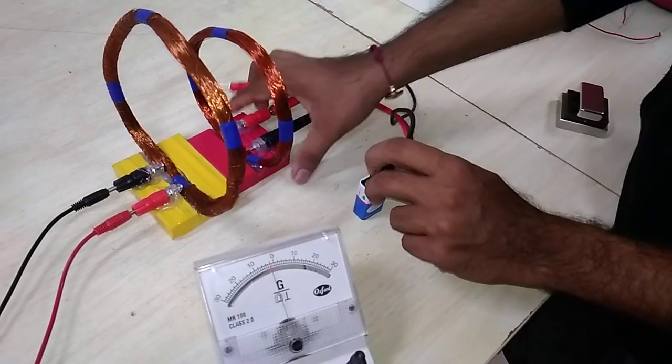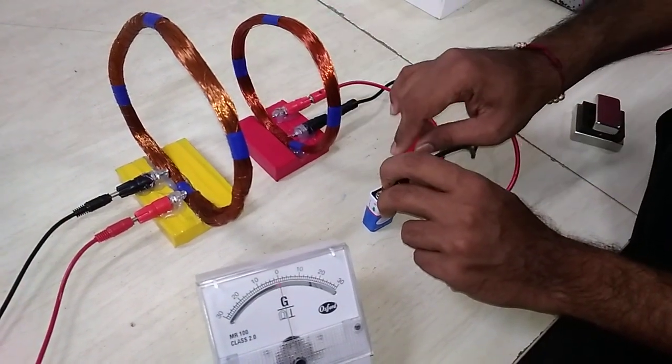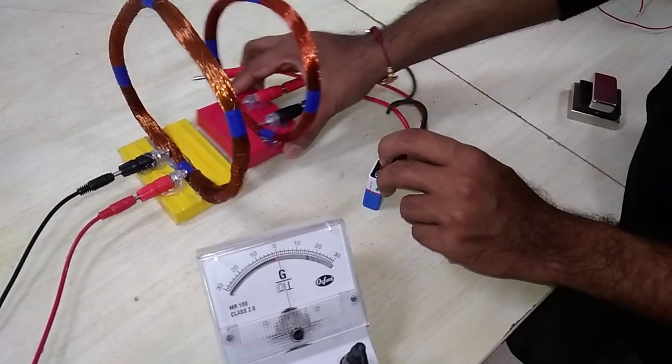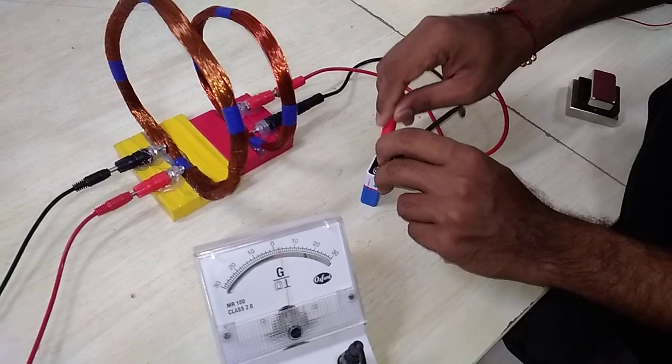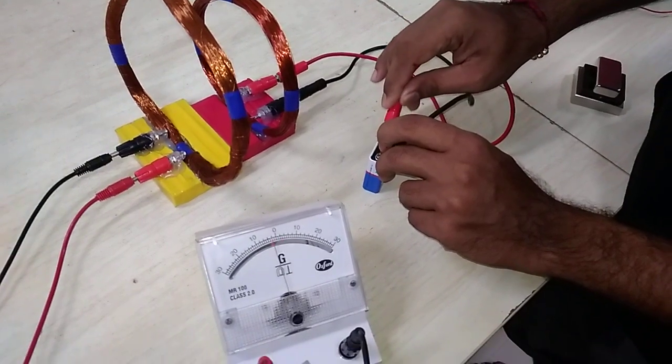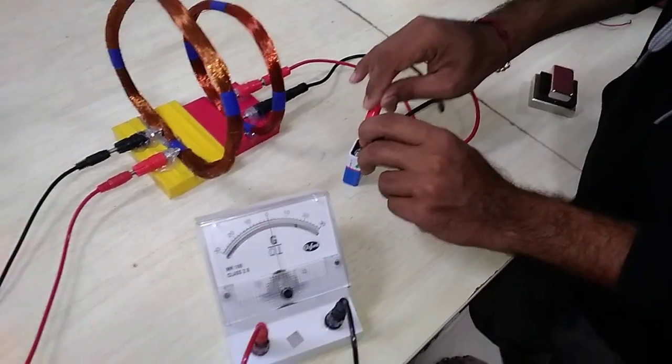If I move further this coil, the deflection will be reduced. If I reduce the distance, deflection will be more. So this is how mutual inductance works.